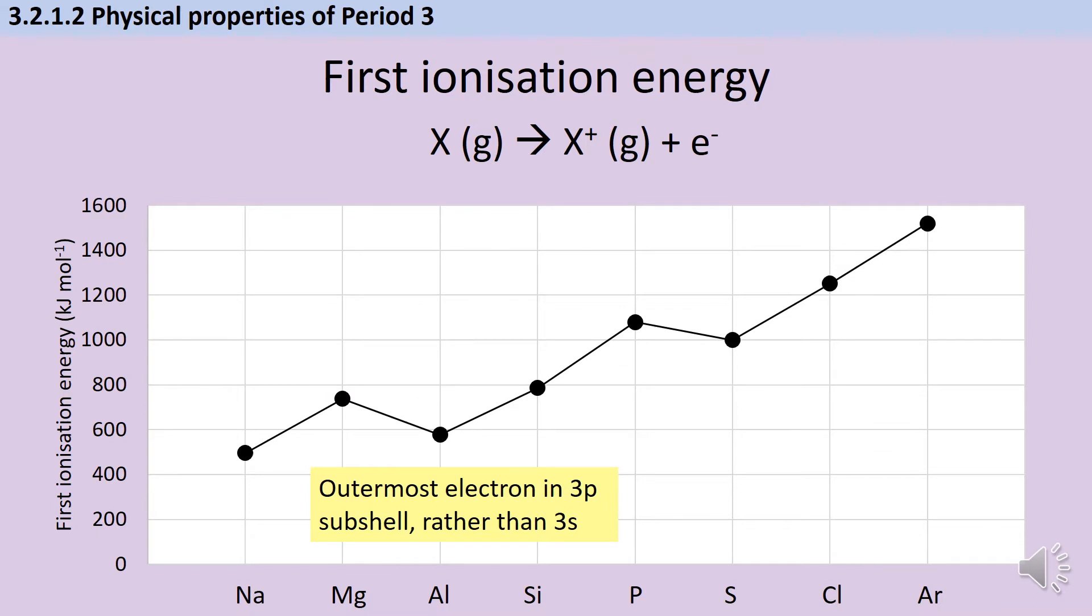But of course that isn't the whole story, because we then get to aluminium, and the first ionisation energy drops. This is because the outermost valence electron in aluminium is in the 3P subshell, whereas for magnesium and sodium, it's in the 3S subshell. It's important when you're answering an exam question about this, that you're naming these subshells, and saying 3S and 3P, rather than just saying it's in a new subshell. You need the name of it. The important thing about the 3P subshell is that it's higher energy than 3S, and therefore it requires less energy to remove the electron from the atom.